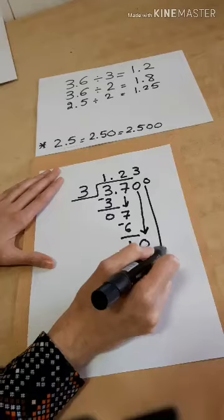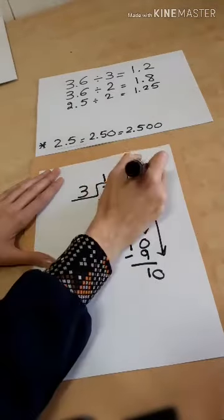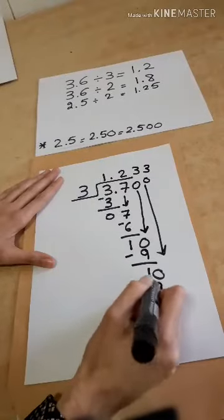Put another zero. Put it down. 10. How many threes are there in it? Also 3. 3 times 3 is 9. Look,